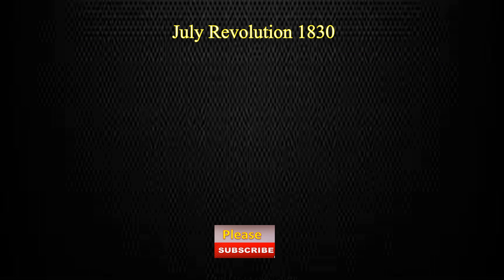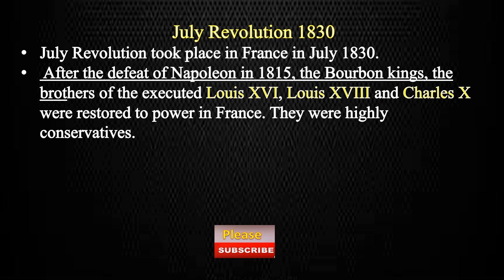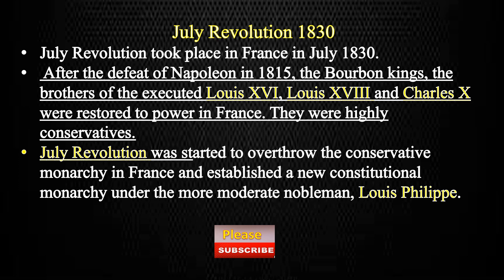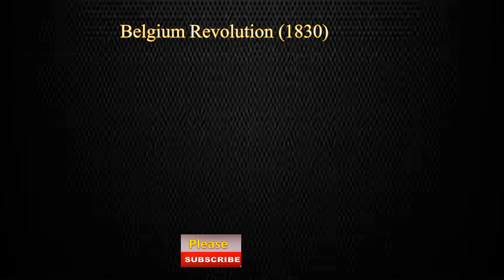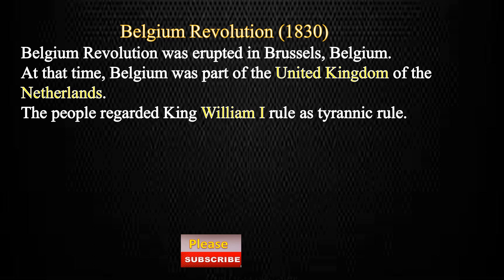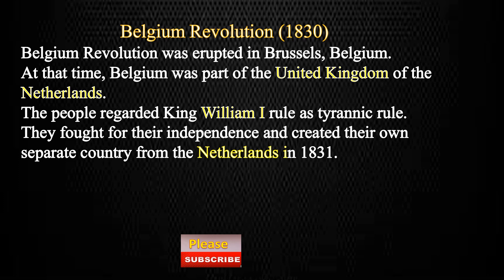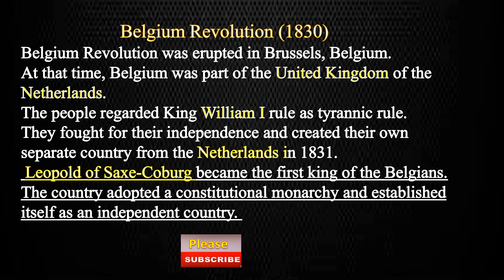In short: The July Revolution of 1830 took place in France. After the defeat of Napoleon in 1815, the Bourbon kings Louis XVIII and Charles X were restored to power. The July Revolution overthrew the conservative monarchy and established a new constitutional monarchy under the more moderate nobleman Louis-Philippe. The Belgium Revolution erupted in Brussels in 1830. Belgium was then part of the United Kingdom of the Netherlands, and the people regarded King William I's rule as tyrannical. They fought for independence, and in 1831, Leopold of Saxe-Coburg became the first king of the Belgians, establishing Belgium as an independent constitutional monarchy.